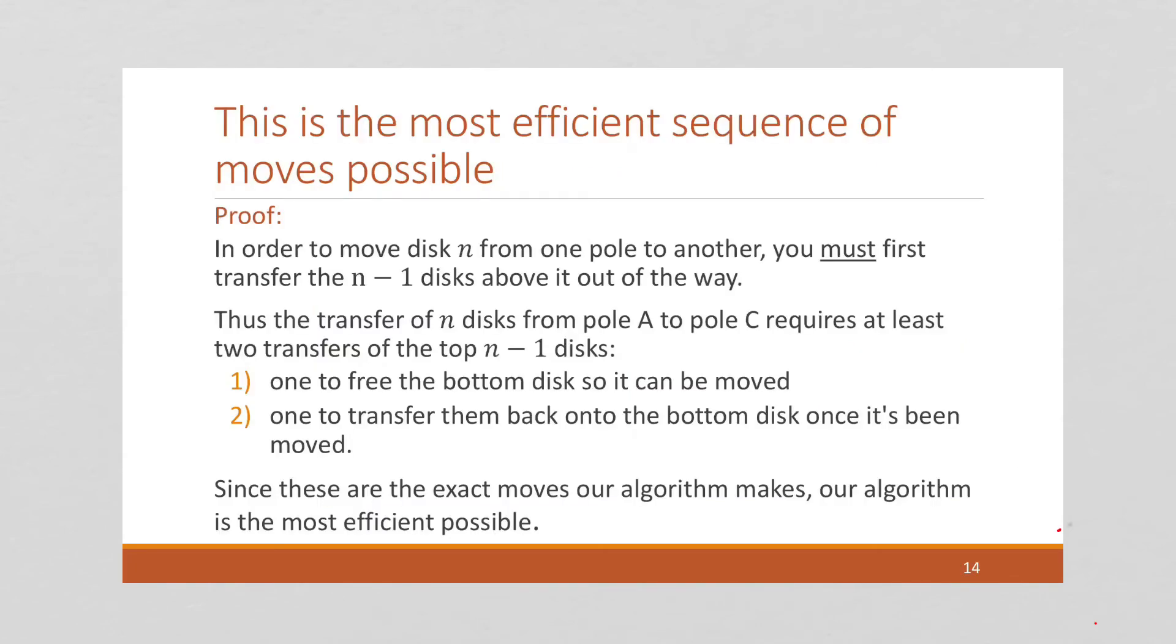Now I'm going to argue that this algorithm is the most efficient sequence of moves possible, even though we don't necessarily know entirely how it works. But we do know that in order to move that bottom disk, disk n, from one pole to another, we must first transfer the n minus 1 disks out of the way. And so in order to transfer all n disks from pole A to pole C, we must move the top n minus 1 disks twice, right?